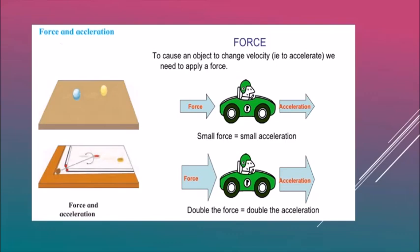Force and acceleration are interconnected — for acceleration to take place, we need to apply some force. For example, if you let a glass marble roll on a smooth tabletop, its velocity decreases over time. The same happens with carom coins: when struck, the velocity is high initially, but decreases as it moves forward, and eventually it stops. If talcum powder is applied to the carom board, the coin moves for a longer time before stopping.